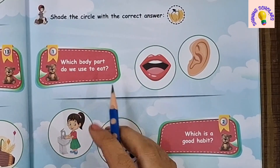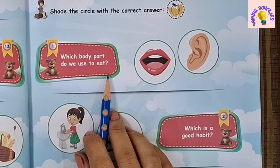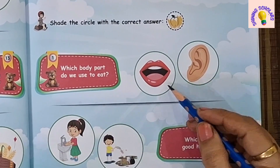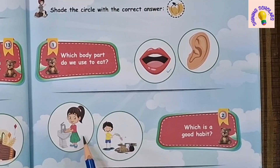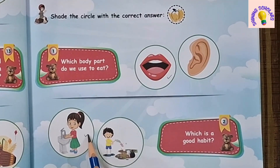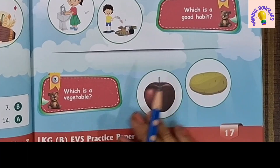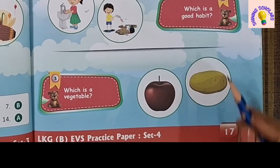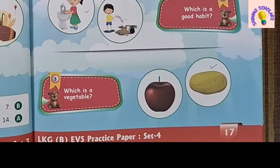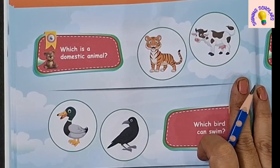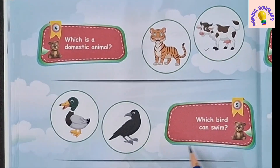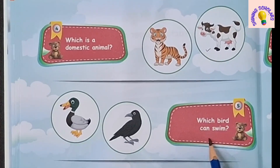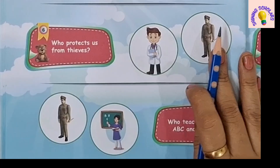Set 4. Which body part do we use to eat? Mouth. Which is a good habit? Washing your hands is a good habit. Which is a vegetable? Potato is a vegetable. Which is a domestic animal? Cow is a domestic animal. Which bird can swim? Duck can swim.